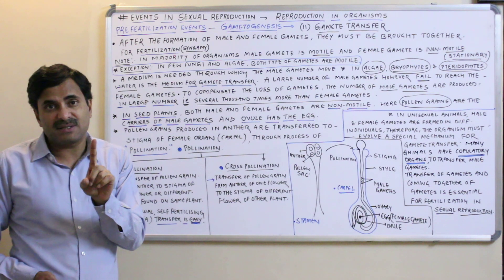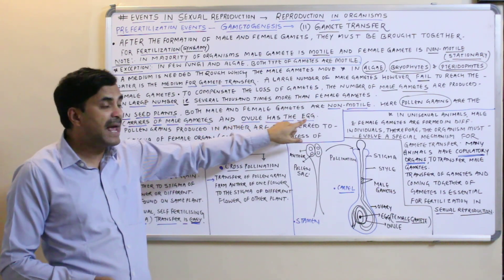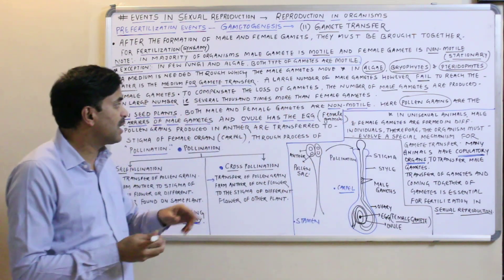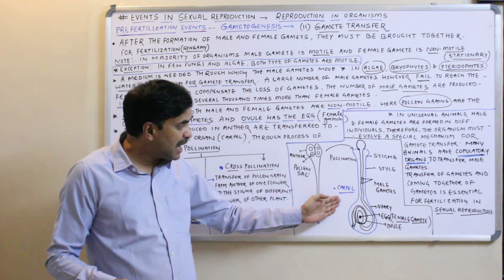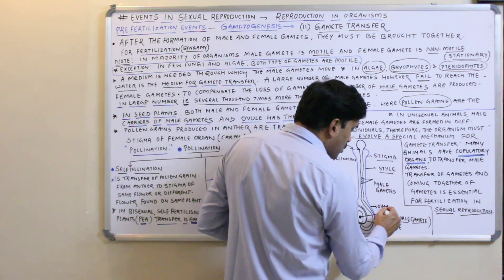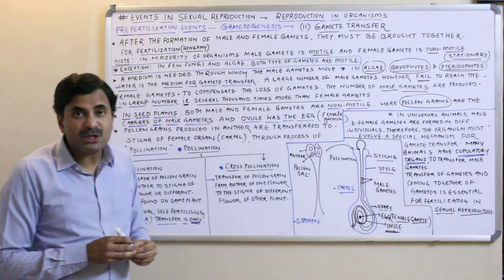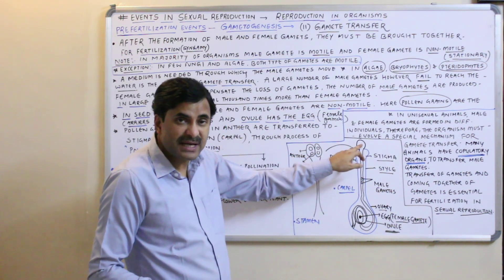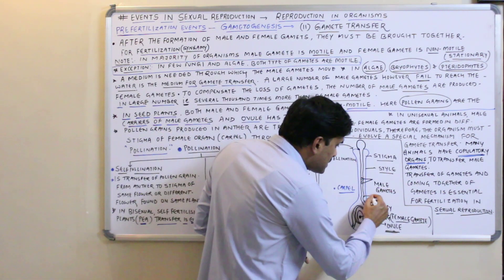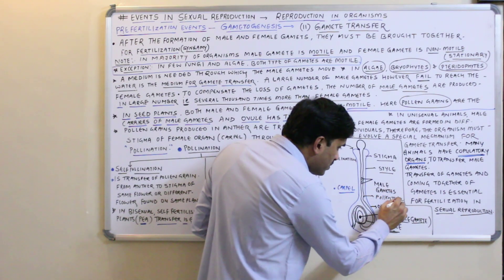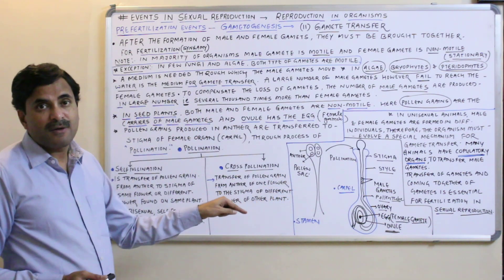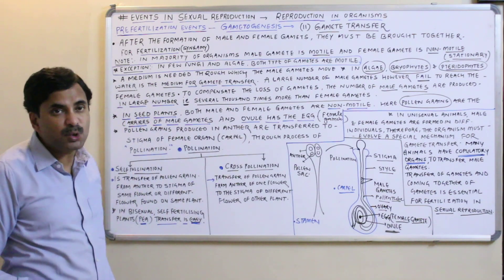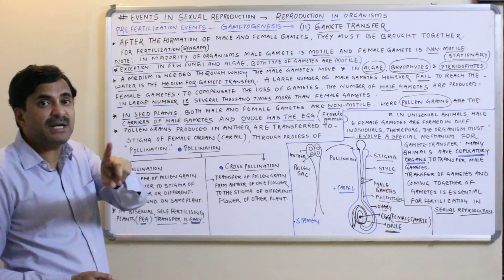The male gametes are produced inside the pollen grains, while the ovule contains the egg — the female gamete. The carpel has three parts: stigma, style, and ovary; the ovary consists of ovules, and inside the ovule the egg is found. A pollen tube carries the male gametes into the ovule, where they fuse with the egg to form the zygote, which later develops into an embryo.